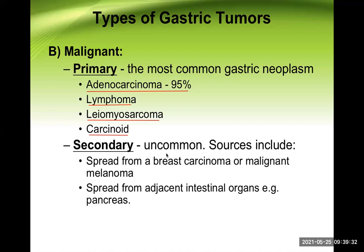Secondary tumors are quite uncommon in the stomach, but the sources include spread from breast carcinoma, malignant melanoma, or spread from adjacent intestinal organs like the pancreas, or even from nervous structures, which is very uncommon. So we don't focus much on this.